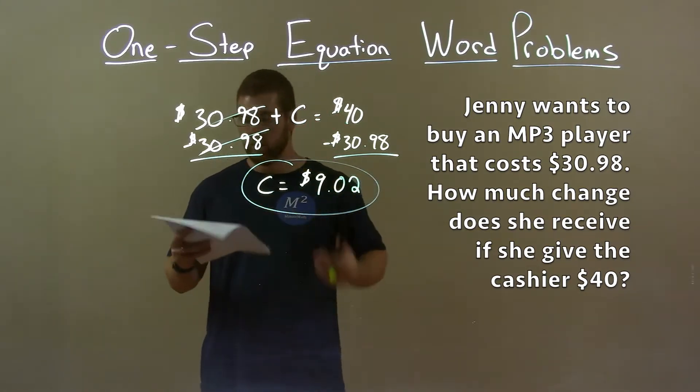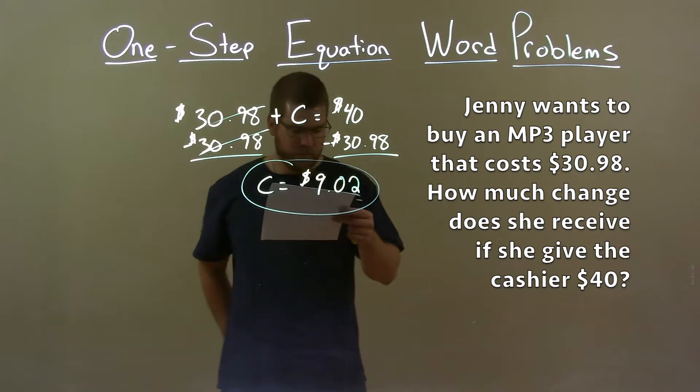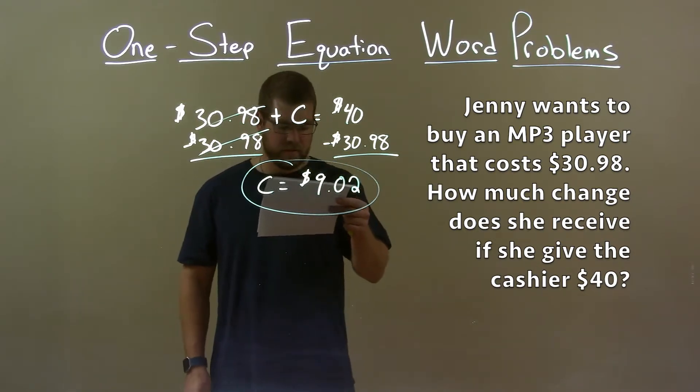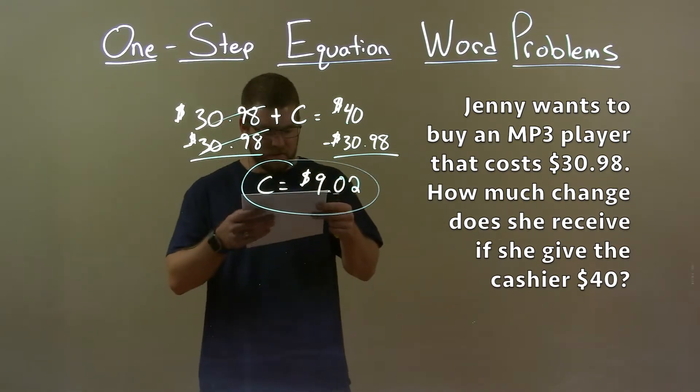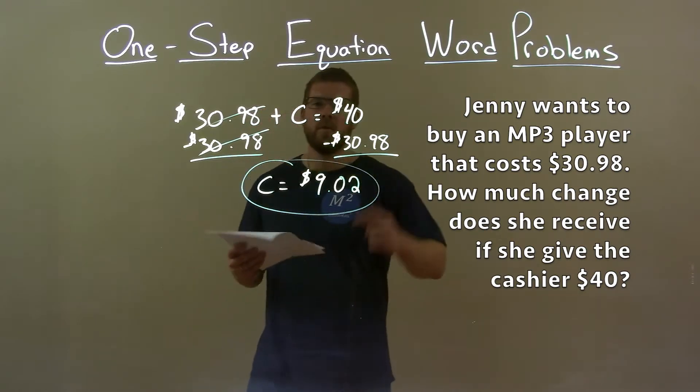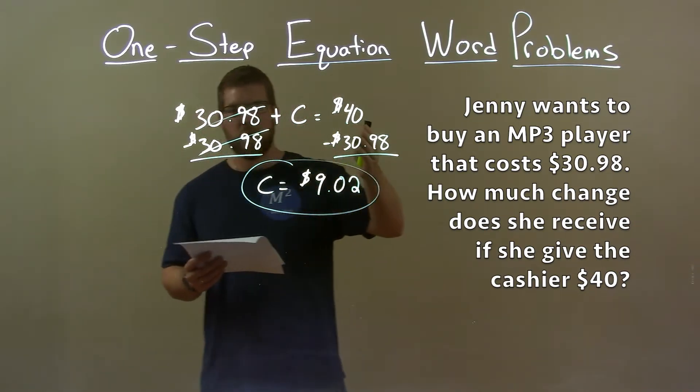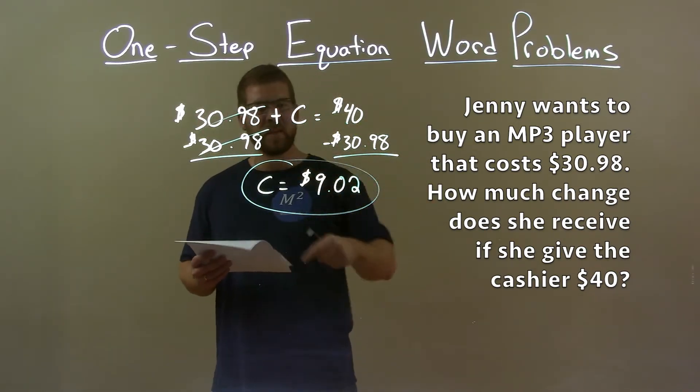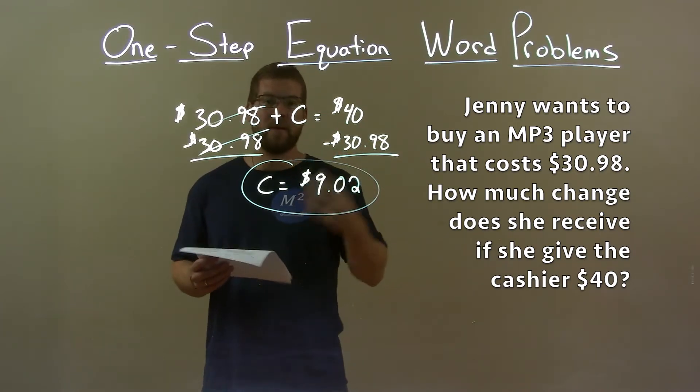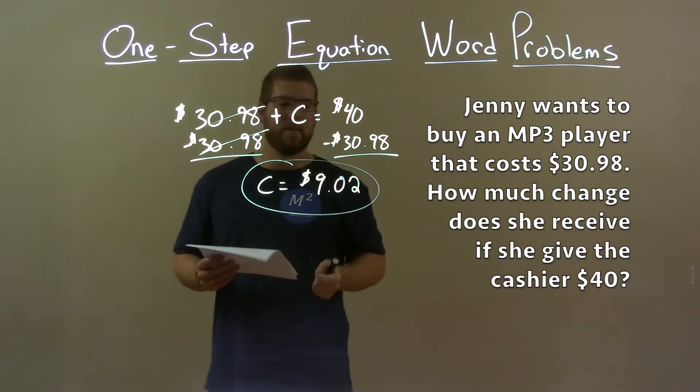Quick recap: we're given the word problem, Jenny wants to buy an MP3 player that costs $30.98. How much change does she receive if she gives the cashier $40? With that information, we created an equation. Then we solved for our variable C, the amount of change that Jenny will receive, which came out to be $9.02.